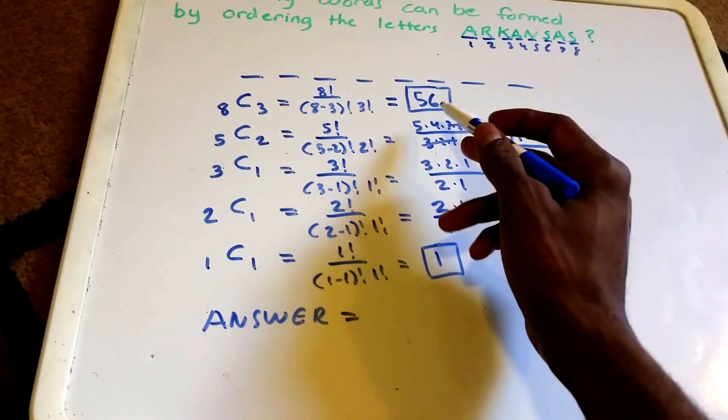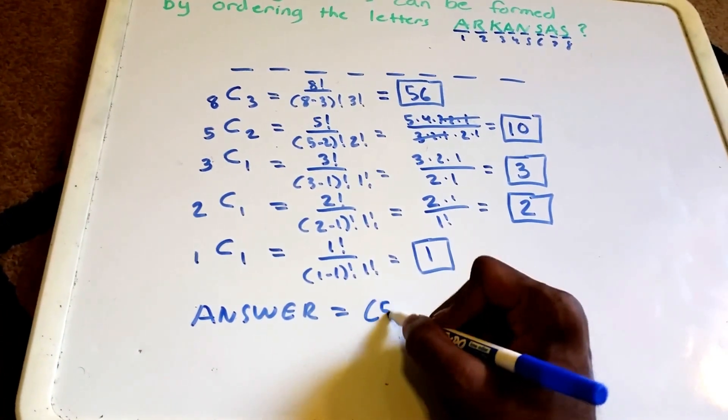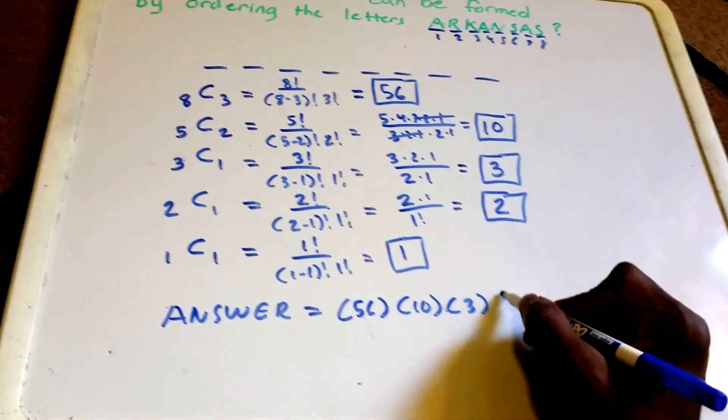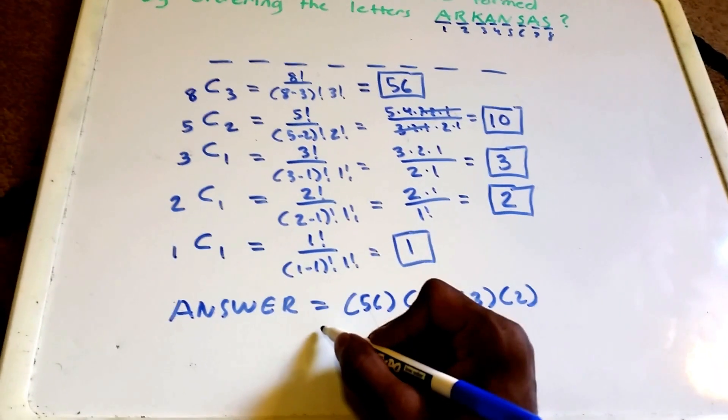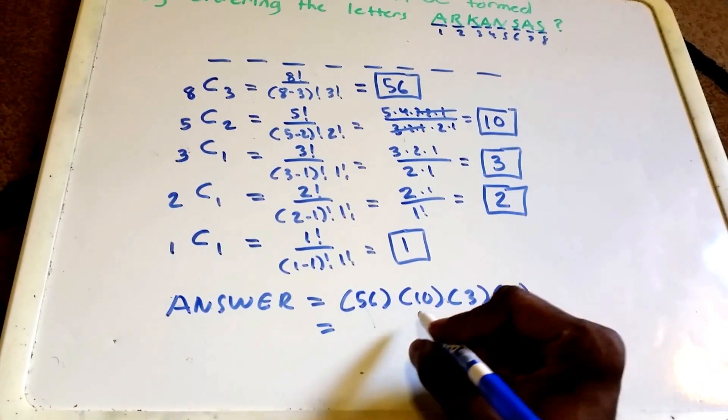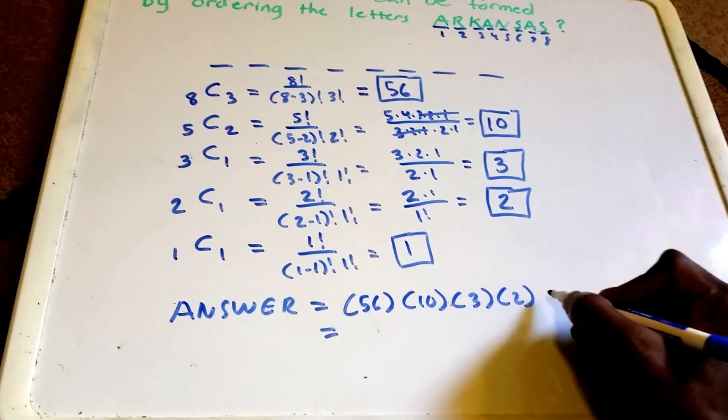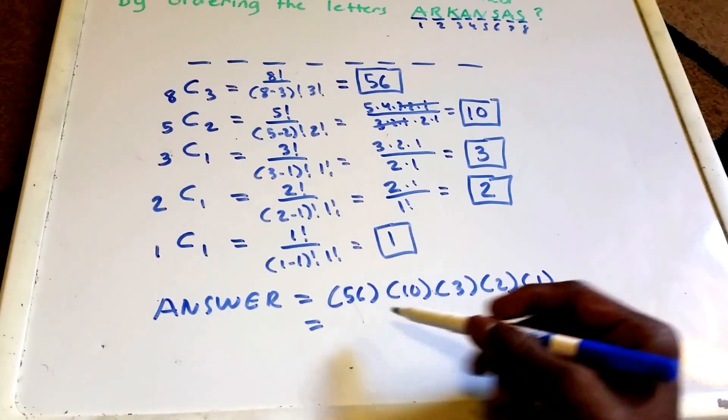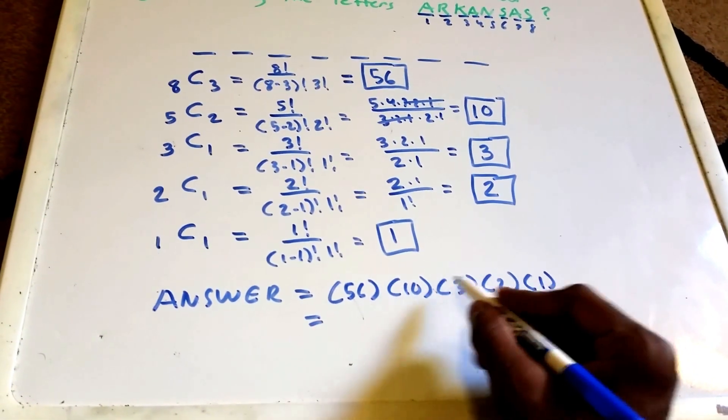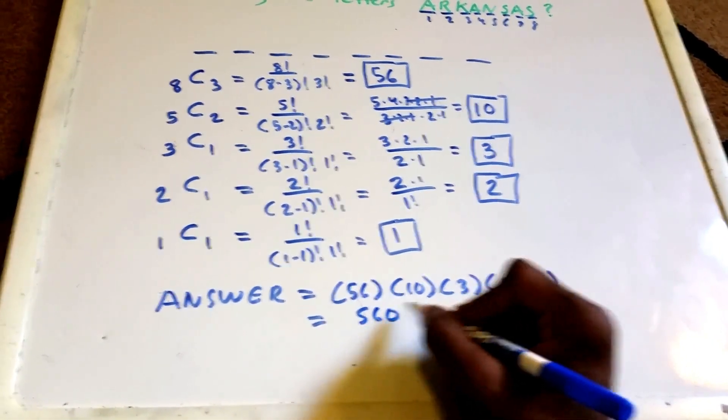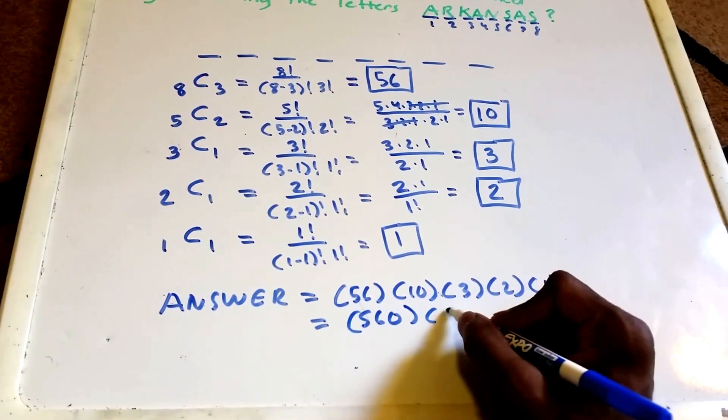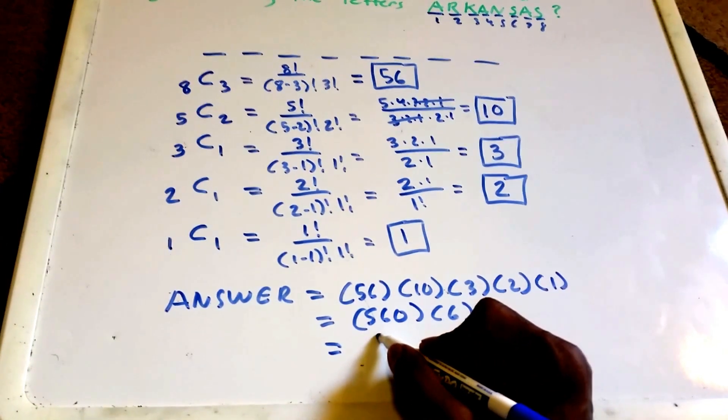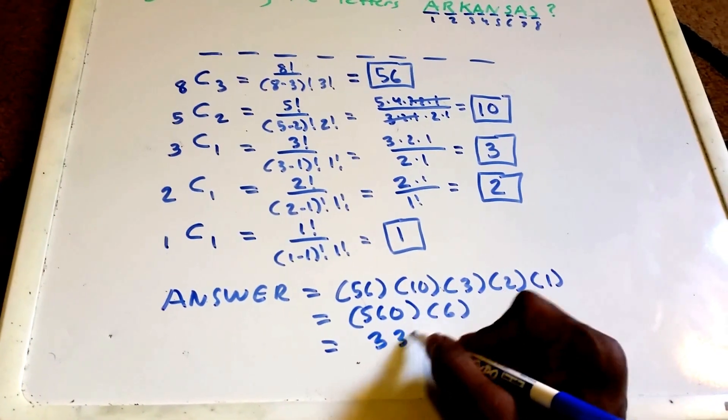Our answer is equal to 56 times 10 times 3 times 2, and if I'm doing my math right, also times 1. Let me make sure I put that. If I'm doing my math right, this is equal to 560 times 6, and that is equal to 3,320.